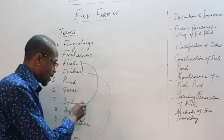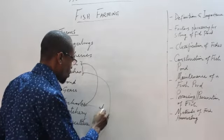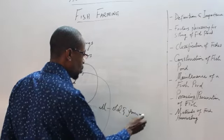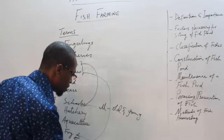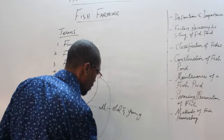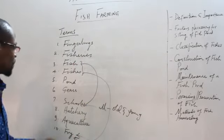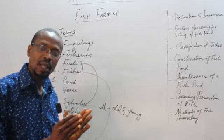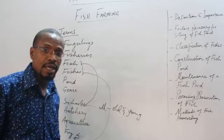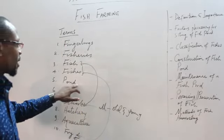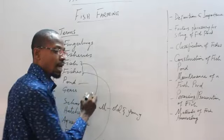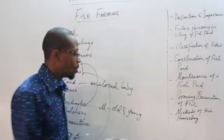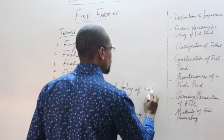When we talk about a pond, it is that enclosed body of water — it can be a stream, a pond, a lake, or a river. That enclosed body of water is what you call a pond, and within it you rear your fish. Gears are the implements and equipment that you use in fishing — trawlers, fishing nets, the hook and line, and a number of others. You call them gears.